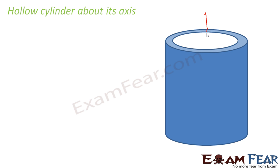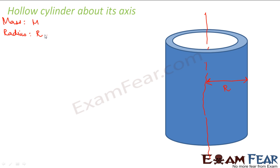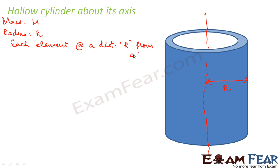Which is the axis of the cylinder? This forms the axis of the cylinder. So let us suppose that the radius of the cylinder is r. We assume that mass of the cylinder is m and radius of the cylinder is r. Now every element on this cylinder — since it is a hollow cylinder, there will be no element inside. So every element on this cylinder will be at a distance r from the axis.